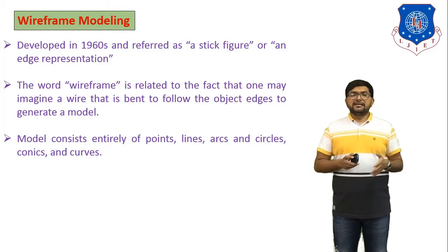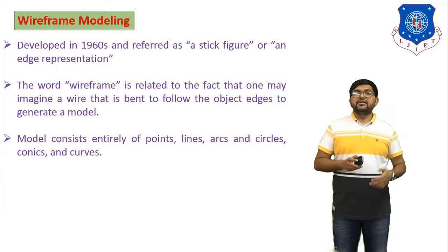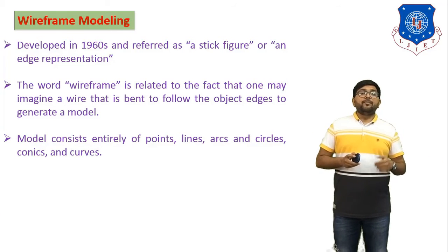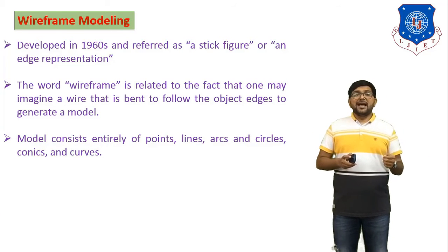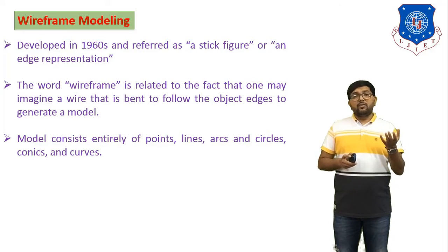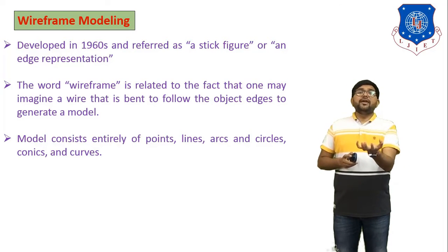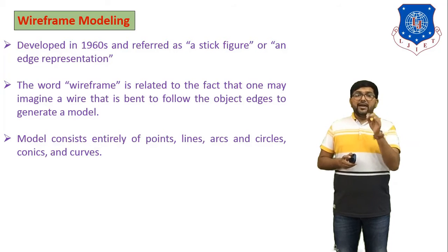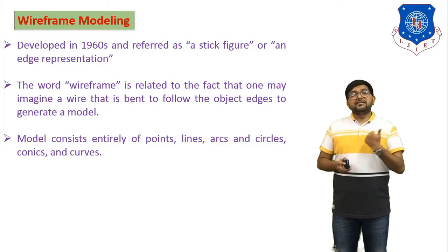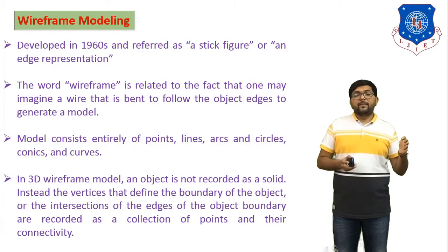In wireframe modeling it is a type of hollow modeling. The model consists of entities of point, line, arc, and circle. In wireframe modeling we consider entities like straight lines, points, arcs, circles, conics, and curves — all these entities are considered in wireframe modeling.